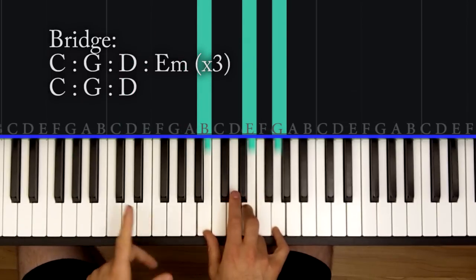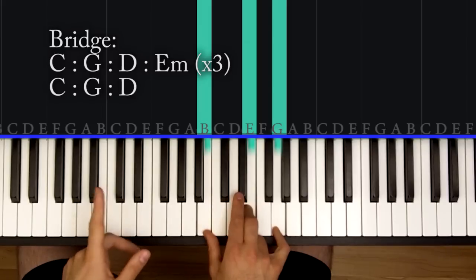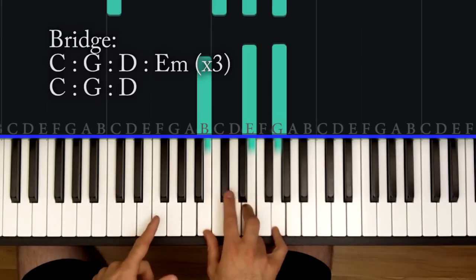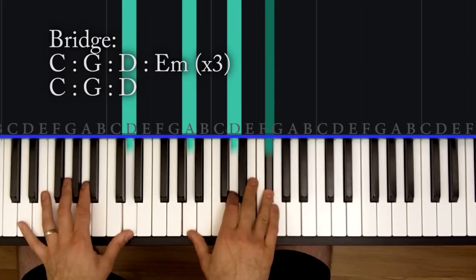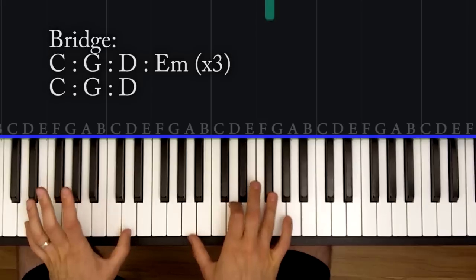Now this last time through you are only going to play the first three chords: the C, the G, and the D. You're not going to play the E minor at the end. When you live like that, the river goes. When you live like that, blood runs cold. Basically that part, you hang on that D.